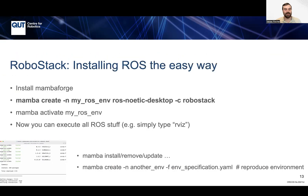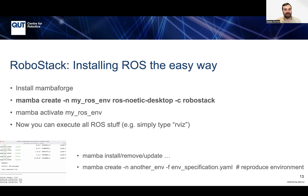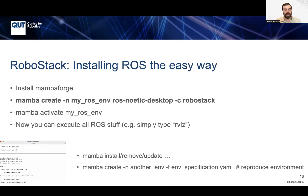How can you install it? Installing ROS the easy way is now a simple matter of installing Mambaforge, and then a single command: `mamba create -n` followed by the name of the environment, whichever ROS packages you want, and specifying the RoboStack channel. Then you simply activate this environment and execute all kinds of ROS commands. You can type `mamba install` or whatever you like to install additional packages, and once you have an environment, you can install, remove, or update more packages, or reproduce environments.